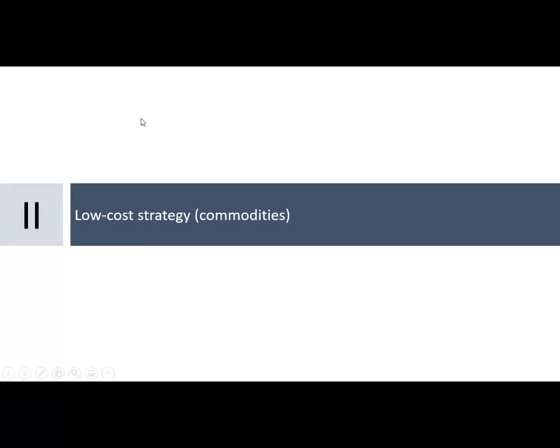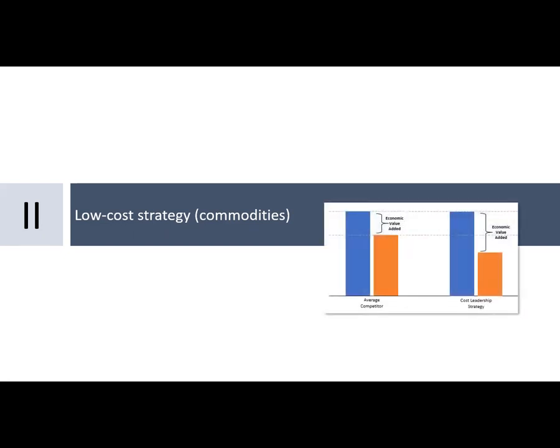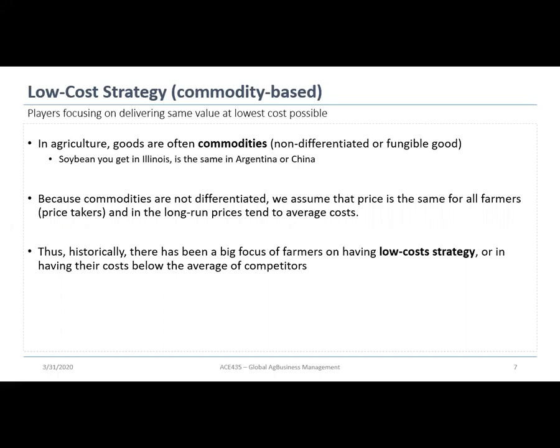We're going to talk about the low-cost strategy and relate it to commodity-based competition. As a quick reminder, we talked about an average competitor that generates value at cost. With the cost leadership strategy, or low-cost strategy, you generate the same value to customers but at a lower cost. In agriculture, goods are often referred to as commodities.